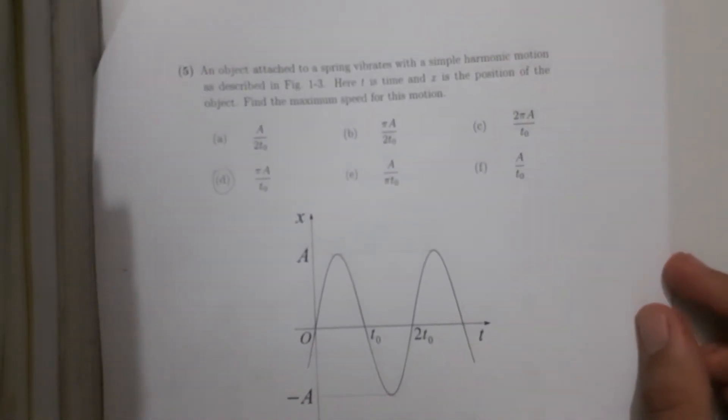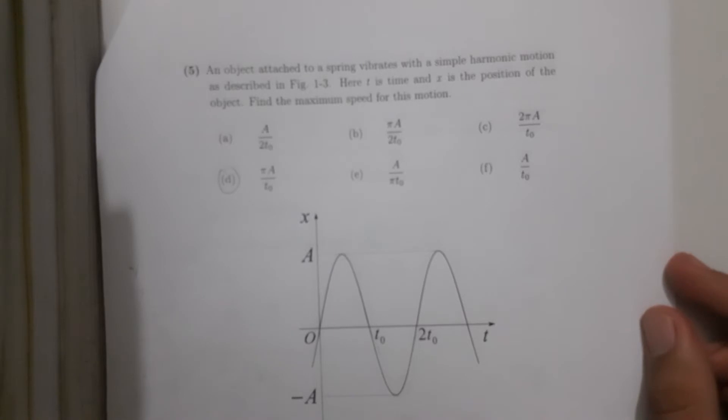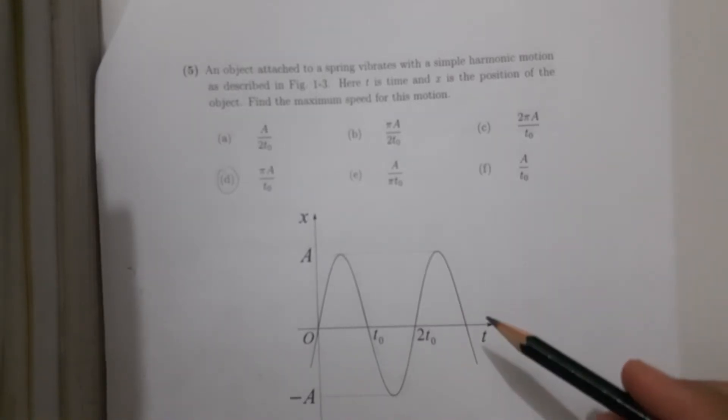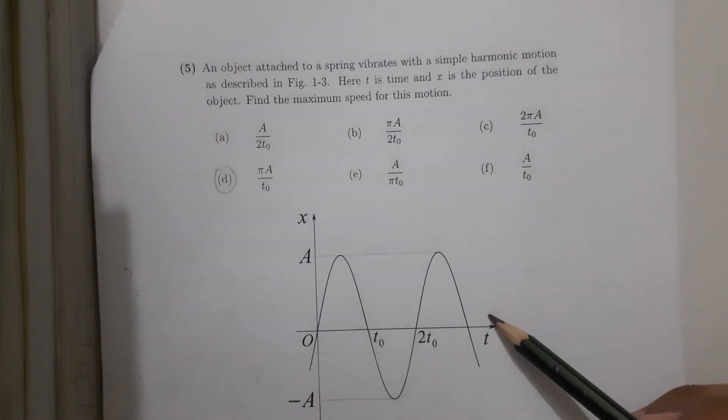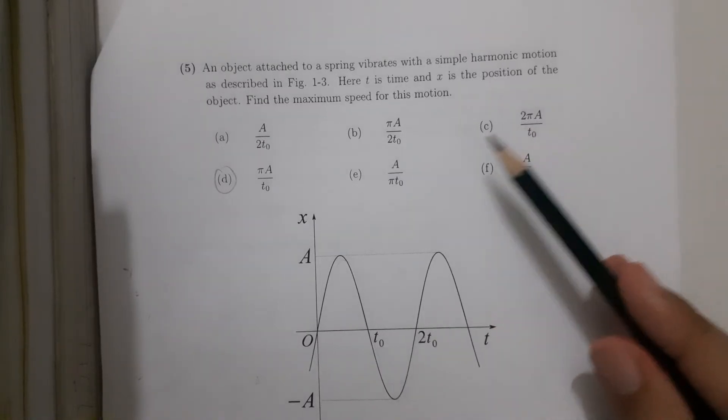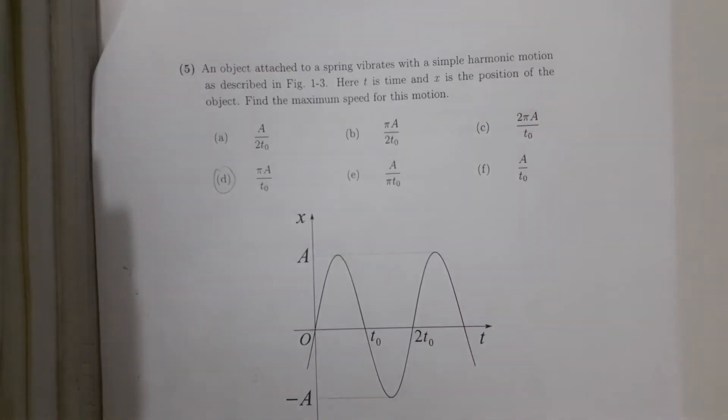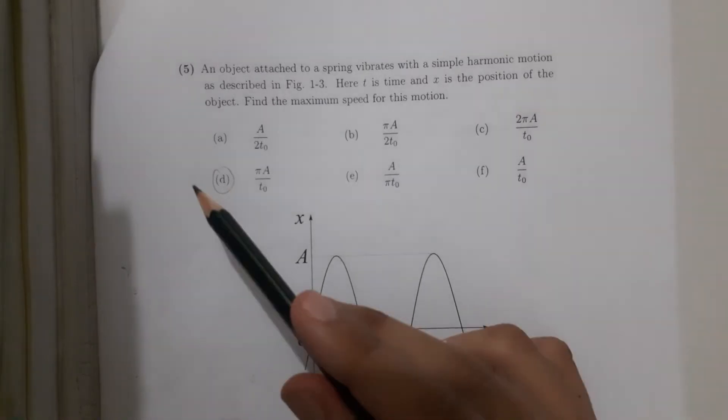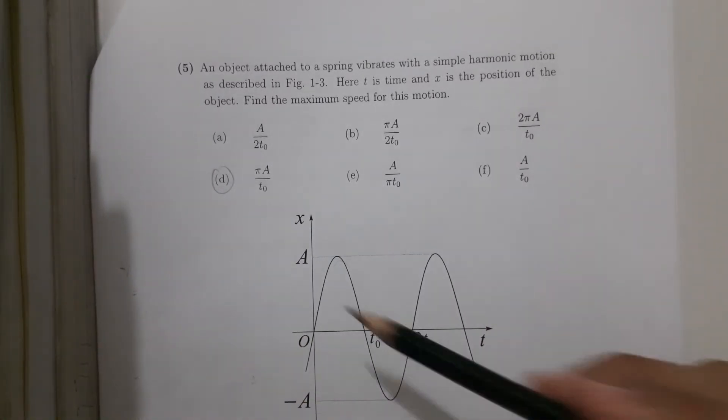An object attached to a spring vibrates with a simple harmonic motion, as described in this figure. And t is at time t, and x is the position of the object. Now we should find the maximum speed for this motion. Now, oh, I think I already circled the answer, but this is the way to do it.